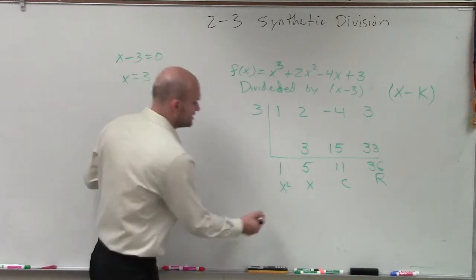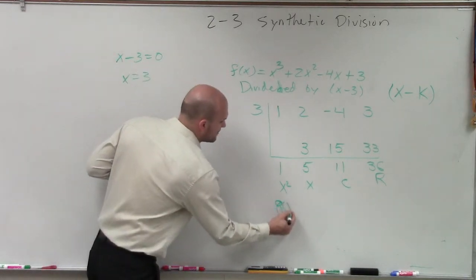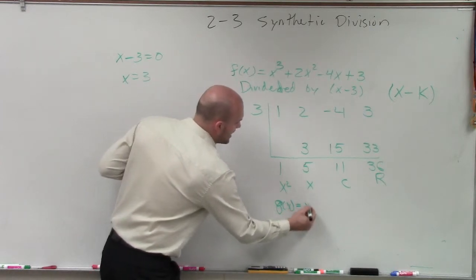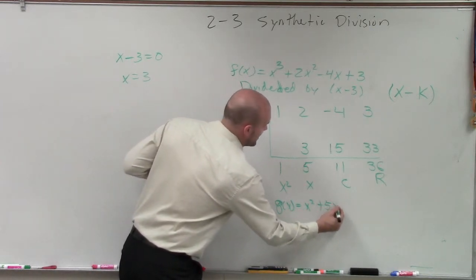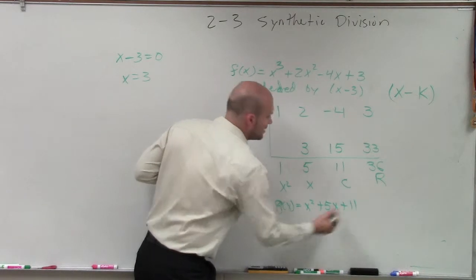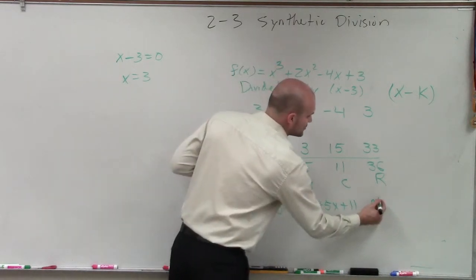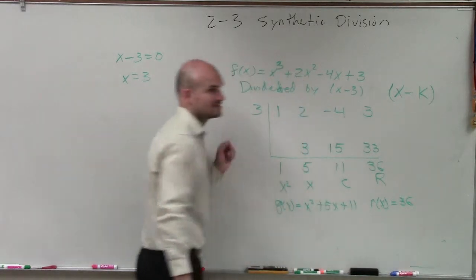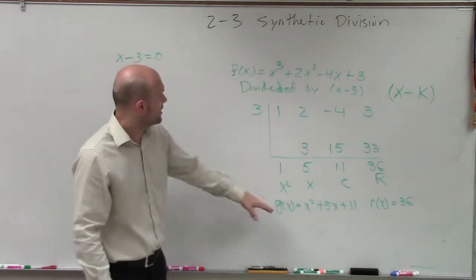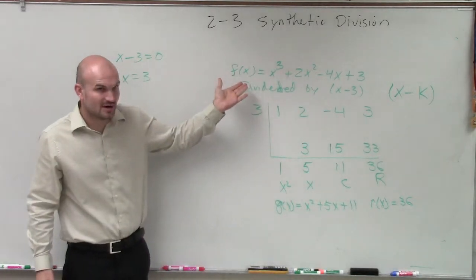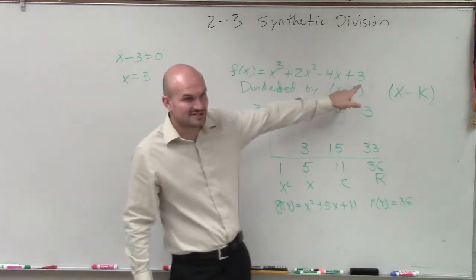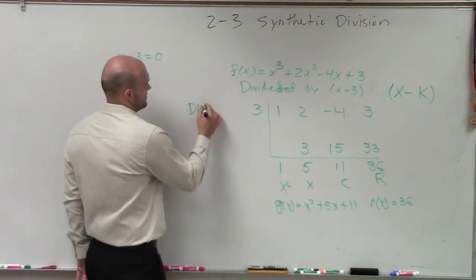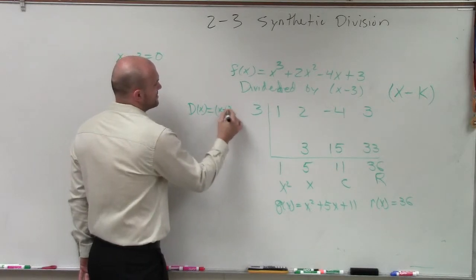So what we can say is our quotient, our Q(x), is equal to x squared plus 5x plus 11, where our remainder, which we'll call our R(x), is equal to 36. Now, we already have our f(x), right? And our divisor, which is our D(x), equals x minus 3.